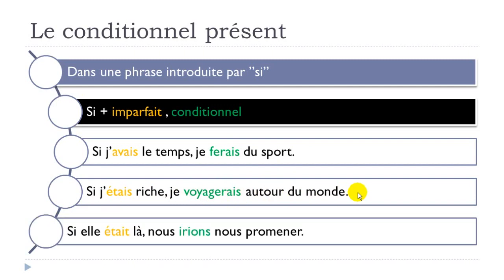And the last example: Si elle était là, nous irions nous promener — If she were here, we would go for a walk. Remember, aller becomes irait at the conditionnel, and se promener means to have a walk.